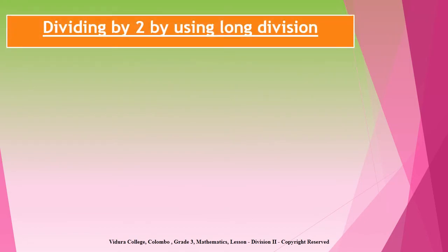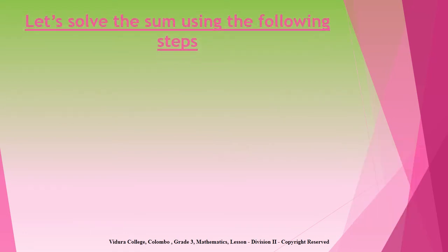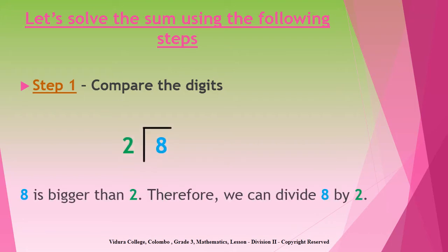Alright children, now you are going to learn how to use long division to divide by two. Look at this example. There are eight cookies on a plate. Divide them equally among two children. There are four steps you should follow when dividing a number by two using long division. Step one is comparing the digits. First, you should compare the digit which you have to divide with the digit you are dividing by. So here when you compare eight with two, you will see that eight is bigger than two. Therefore, we can divide eight by two.